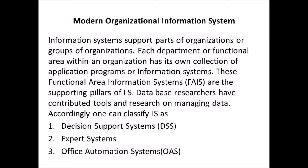In the previous lecture, we have discussed Organizational Information Systems. Now let us discuss Modern Organizational Information Systems and its classification. Information Systems support parts of organizations or group of organizations. Each department or functional area within an organization has its own collection of application programs or information systems. These functional area information systems are the supporting pillars of information systems. One can classify Information Systems as Decision Support Systems, Expert Systems, and Office Automation Systems.